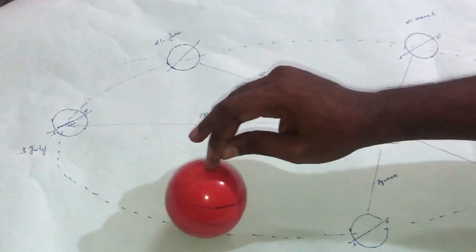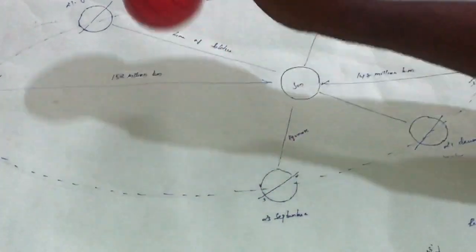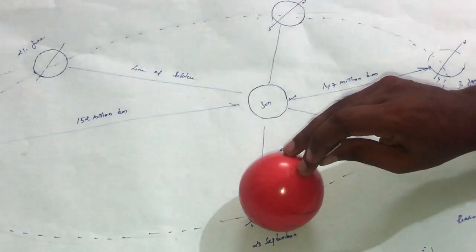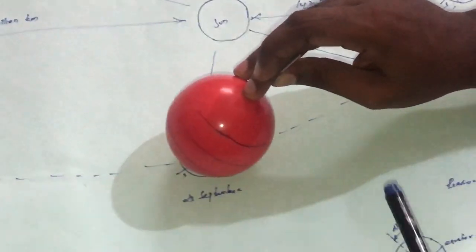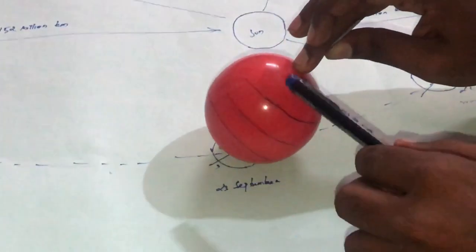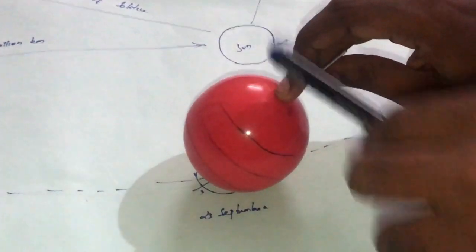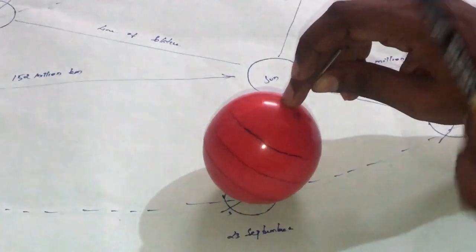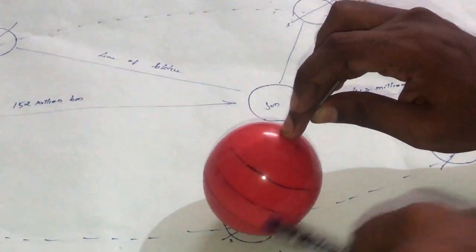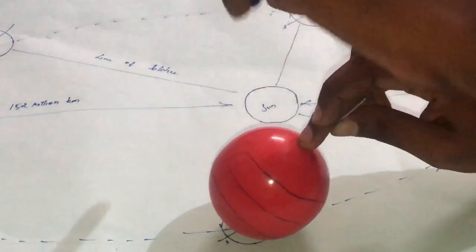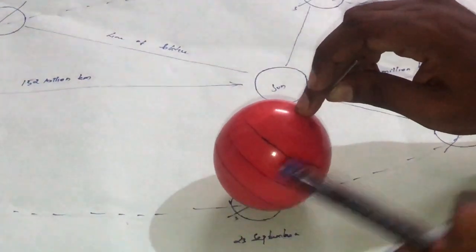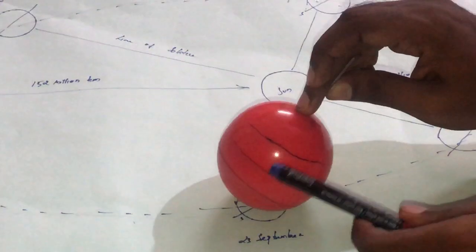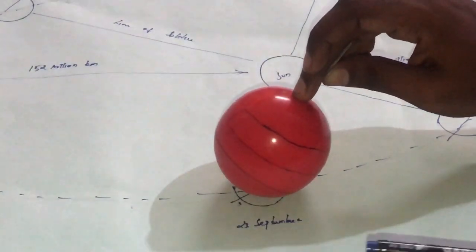Moving towards 23rd of September, in this position both north and south poles are equally visible to the sun. This is called the equinox, meaning the length of day and night are the same — 12 hours of day and 12 hours of night — on exactly 23rd or 22nd of September. Both the south pole and north pole have 12 hours of day and night.